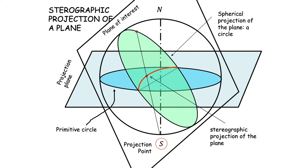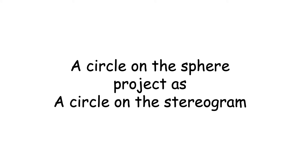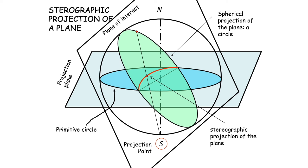This is where a beautiful theorem of stereographic projection helps us: a circle on the sphere will always project as a circle on the stereogram. This needs a proof, but that is work for another video — here we take this theorem as true. So this curve representing the plane is also a circle, and it is called a great circle. Planes are therefore represented by great circles, which pass through two diametrically opposite points of the primitive.